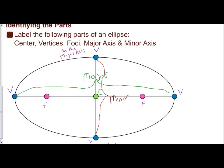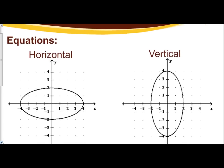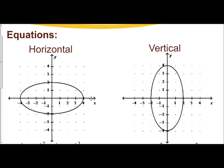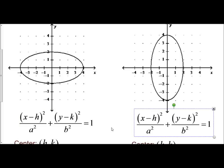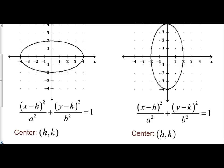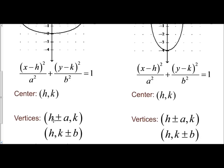Every time we graph an ellipse, we'll be finding the center, vertices, foci, the length of the major axes, and the length of the minor axes. We have formulas for horizontal and vertical ellipses. A horizontal ellipse is stretched more along the horizontal axes and a vertical ellipse is stretched more along the vertical axes. The formulas are the same: (x minus h) squared over a squared plus (y minus k) squared over b squared equals 1 for both. The center is still (h, k), just as with parabolas and circles. The vertices are found two ways: (h ± a, k) and (h, k ± b). Since the formulas are the same, finding the vertices is the same.